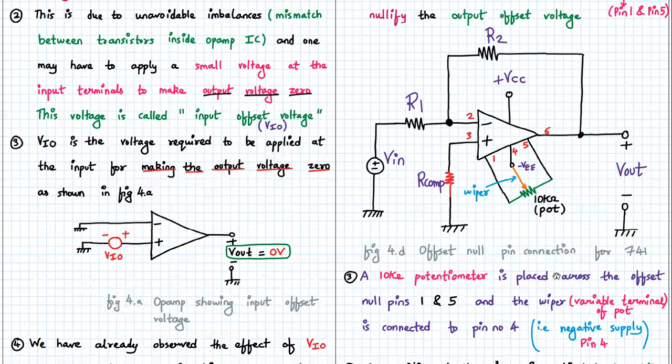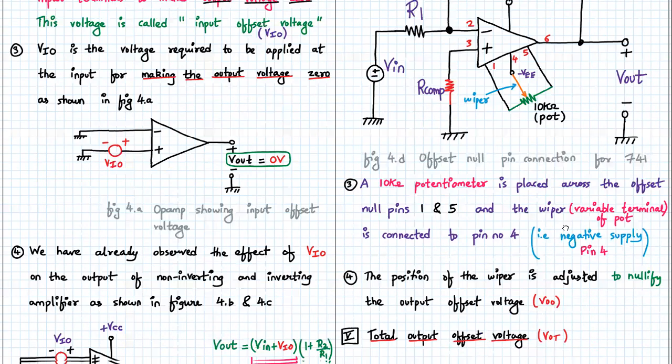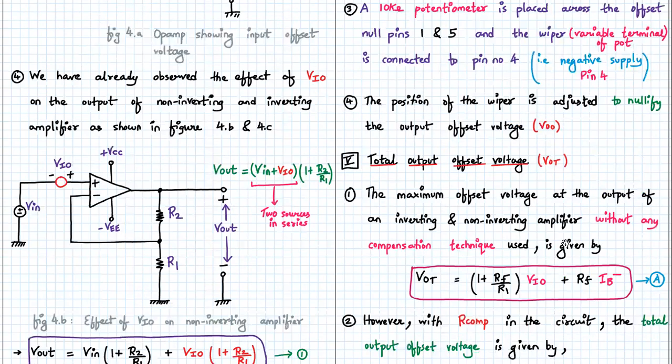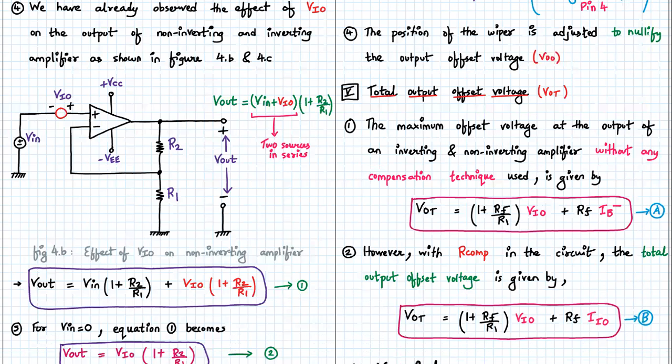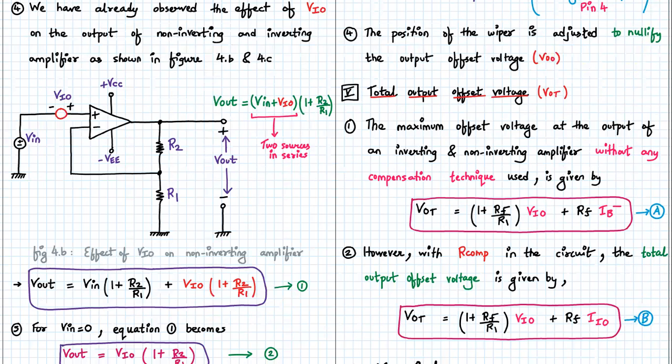So this is a very important compensation technique, and one should remember how to make the output offset voltage go to 0. Now the total output offset voltage VOT is given by two points we can discuss and then we can write the formula VOT. The first point is the maximum output offset voltage at the output of an inverting and non-inverting amplifier without any compensation technique. Now here we are combining the effect of input bias current and input offset voltage. So hence the term VIO and IB minus comes into the picture. So VOT will be given by 1 plus RF upon R1 into VIO plus RF into IB minus. This is our equation number A.